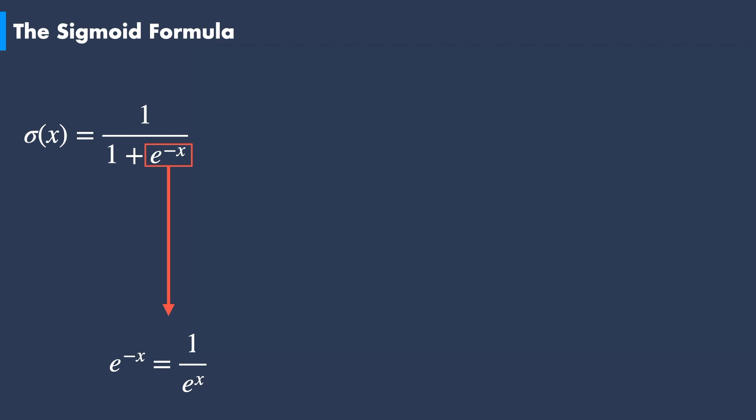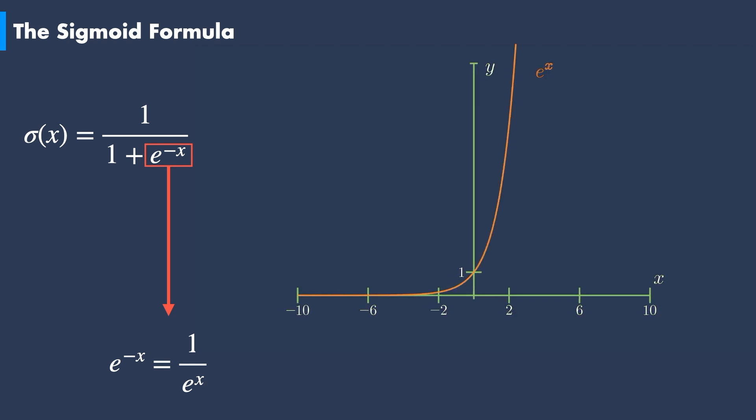How does the plot of the inverse of the exponential look like? Let us plot both the exponential and its inverse on the same graph. As we can see, the inverse of the exponential has the same profile as the exponential function. The only difference is the inverse exponential is flipped with respect to the y-axis.